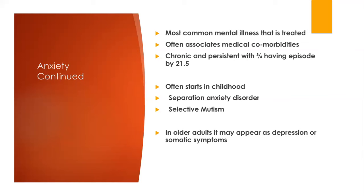Anxiety often starts in childhood and can often be diagnosed as separation anxiety disorder or selective mutism. It's also comorbid with medical diagnoses, especially when that medical diagnosis can be traumatic, terminal, or when substance use is involved. In older adults as well as in children, anxiety can manifest somatically, meaning through physical symptoms.